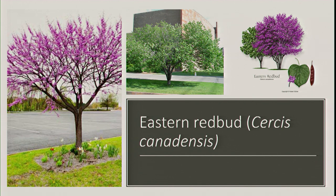Eastern redbud — we plant a lot of these as an organization. It's a great, very easy to identify tree. It's a small stature tree, it only has its blooms for about a week and a half to two weeks of the year, so that's not a great year-round ID tool. But the leaves are heart-shaped — I don't think we have any other heart-shaped leaves in this area — and then there's the bean pod, which should be on the tree if the leaves aren't there.